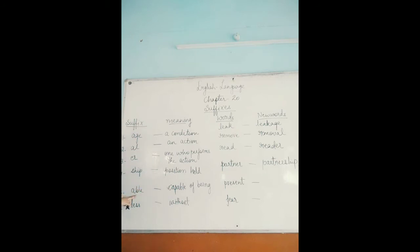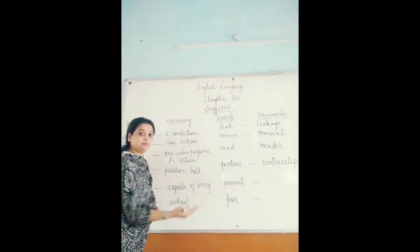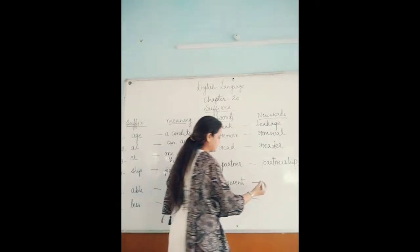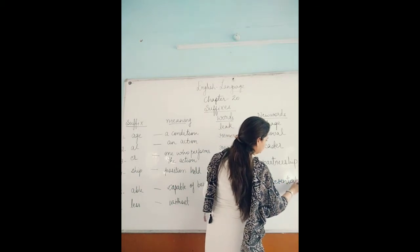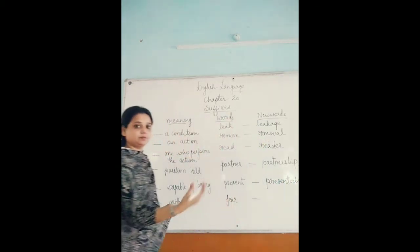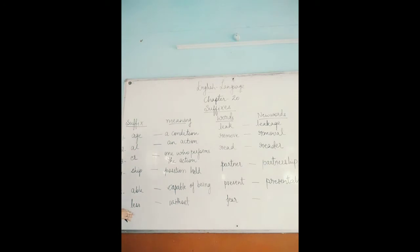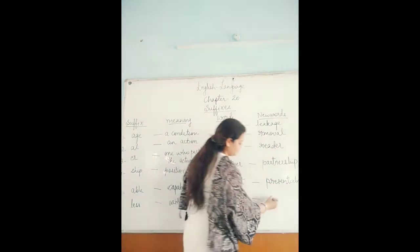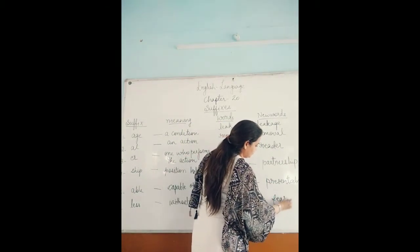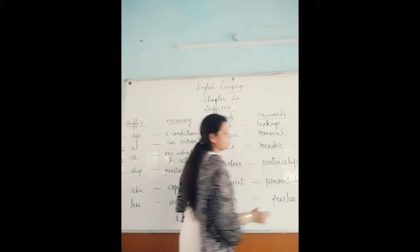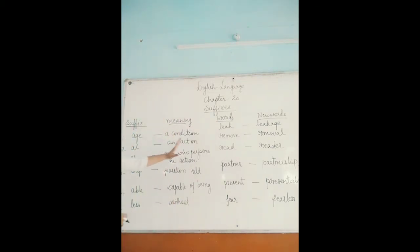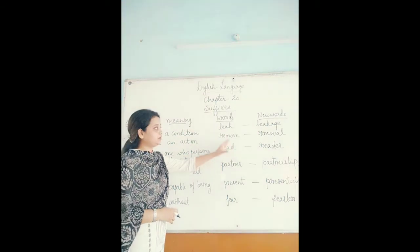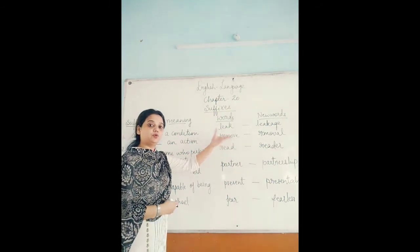Suffix able means capable of being — for example, present becomes presentable. Suffix less means without — for example, fear becomes fearless, meaning without any fear. Like this we change the word into another new word with a new meaning.